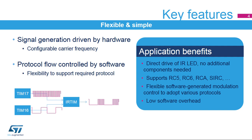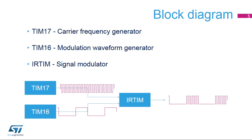The CPU workload is limited to the control of the modulation signal only. The block diagram consists of timer 17, used as a carrier frequency generator, timer 16, used as the modulated waveform generator, and the infrared timer block contains the signal modulator, which combines the carrier frequency and the modulation waveform into the remote control signal.